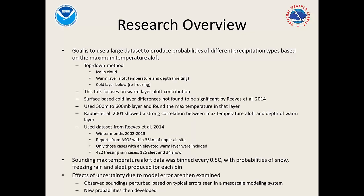The goal of this project was to get a large dataset of cases to produce probabilities of different precipitation types based on the maximum temperature aloft. Using the top-down method in simplified form: you need ice in the clouds, so it must be cold enough for ice formation. Then you look at the warm layer aloft — how much melting occurs — and then whether refreezing happens below that warm layer. This talk completely focuses on the warm layer aloft contribution.